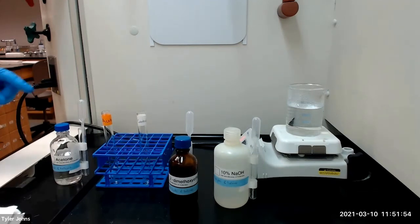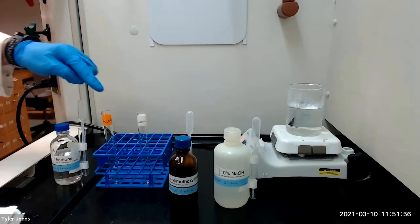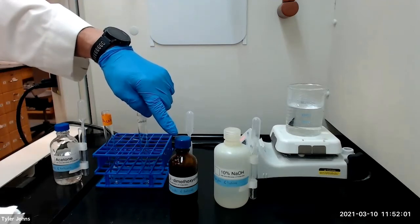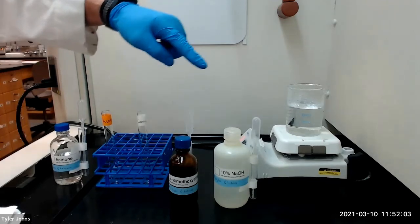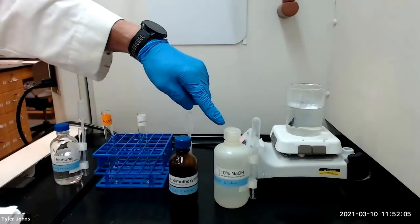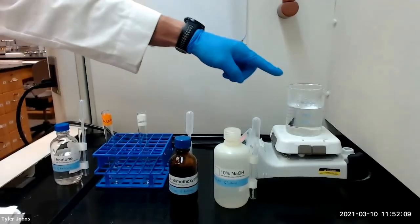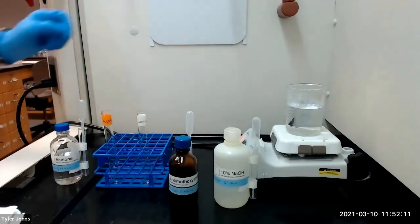We will begin by adding a small amount of acetone to a test tube and then dissolving the acetone in two milliliters of 1,2-dimethoxyethane. We will then add two milliliters of 10% sodium hydroxide solution and place the test tubes in a 60 to 70 degrees Celsius hot water bath.